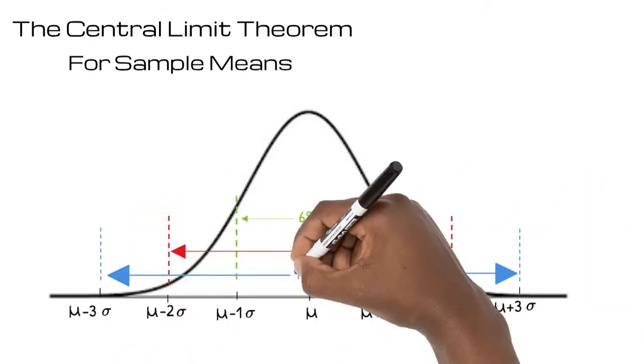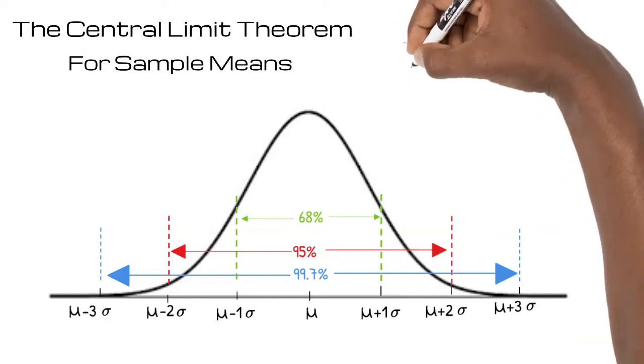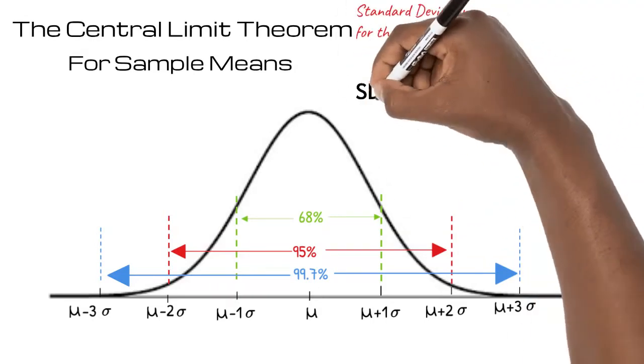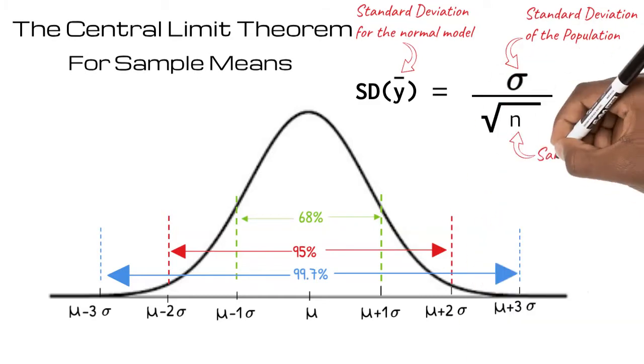In these problems, we will be given the mean and standard deviation of the population. The mean of the model will be the same. To find the standard deviation for the normal model, we divide the standard deviation of the population by the square root of the sample size. Everything will become clearer as we begin to work through an example.